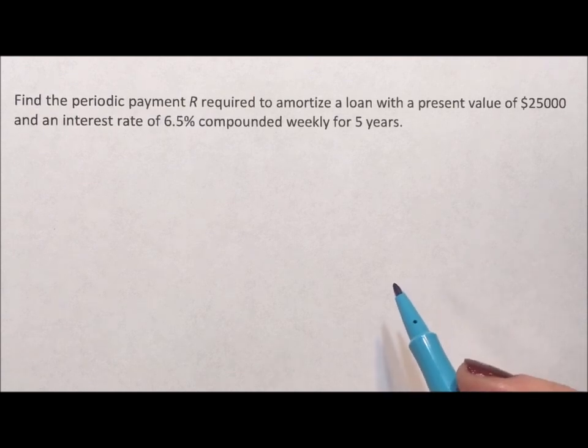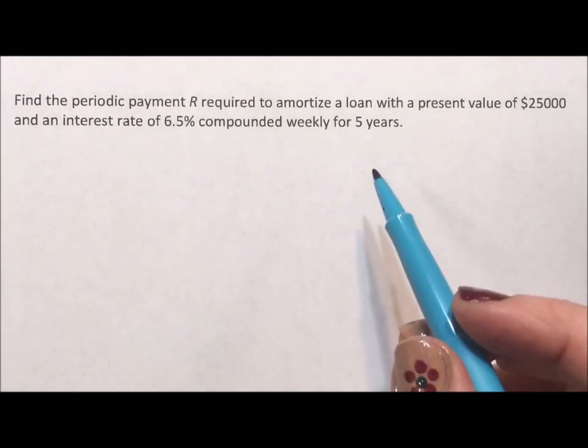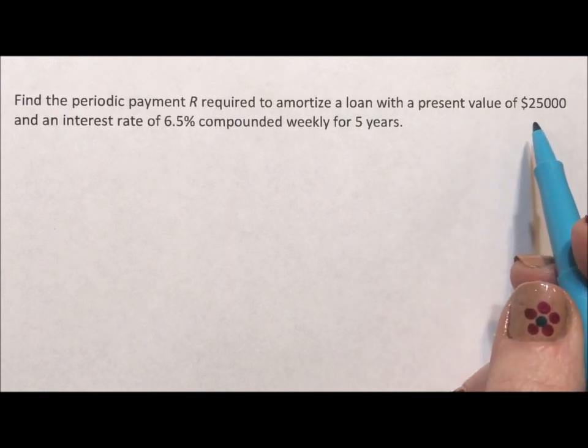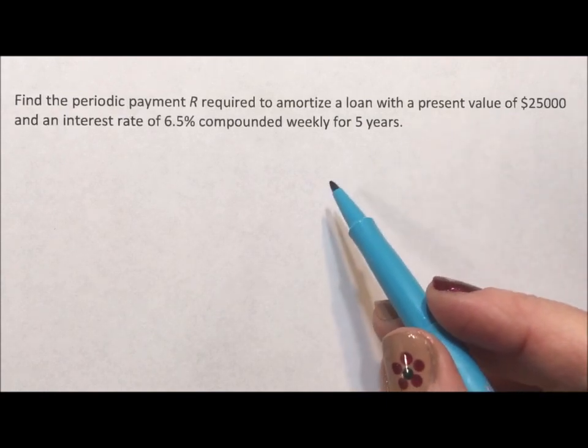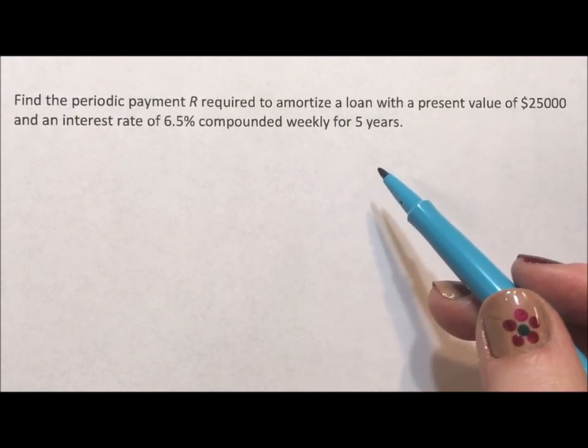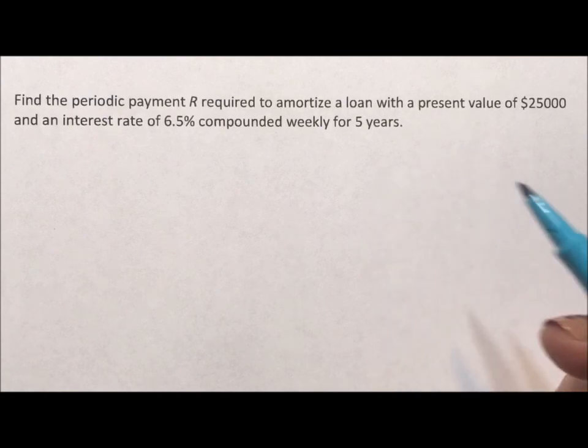All right, it says, find the periodic payment R required to amortize a loan with a present value of $25,000 and an interest rate of 6.5% compounded weekly for five years.